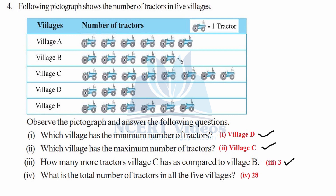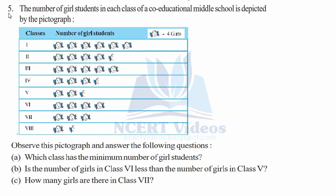For the total number of tractors in all five villages: a quick method is to count columns — there are 5 complete columns across 5 villages, making 5 × 5 = 25... then counting the remaining row-wise: we get a total of 28 tractors across all five villages. This completes question 4.